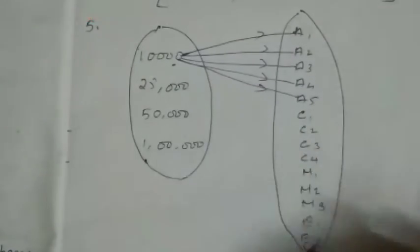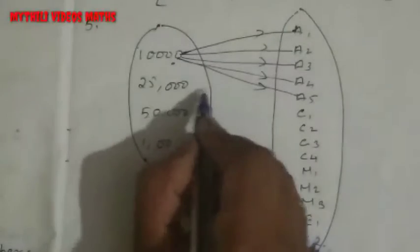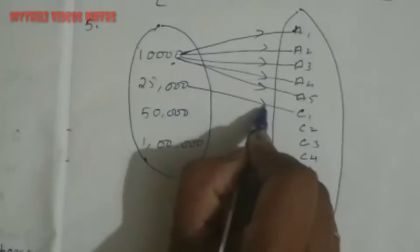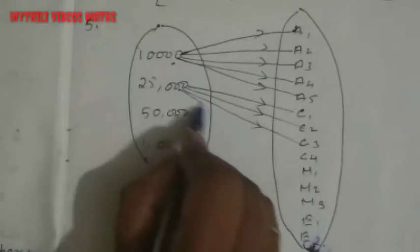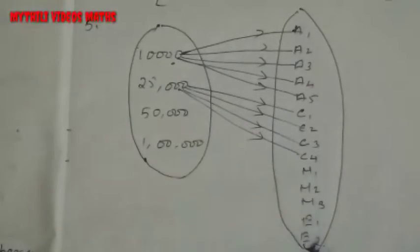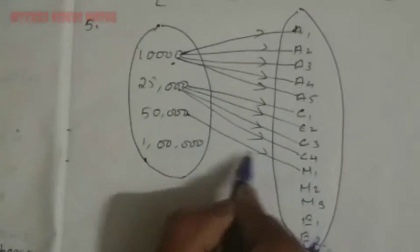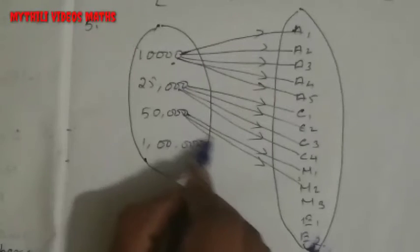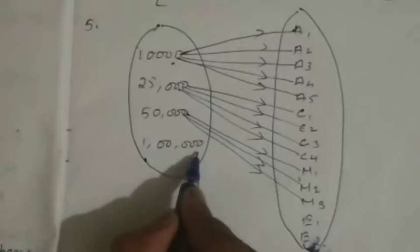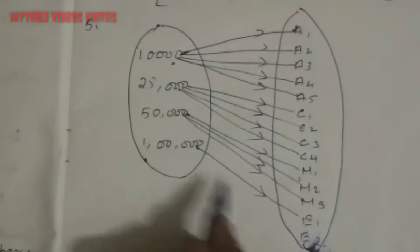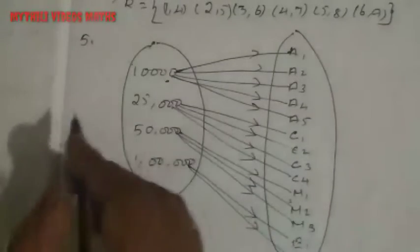So, 5 assistants get 10,000 salary, and then 25,000 salary for C1, C2, C3, and C4. Then 50,000, and then E1 and E2.